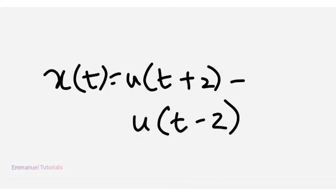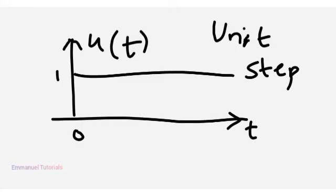Here we have two unit step signals which are shifted versions of the original one. That is what we will use to find out the x(t) signal. First we know what is the original unit step. It starts from 0 and has amplitude 1 constantly from 0 to infinity.